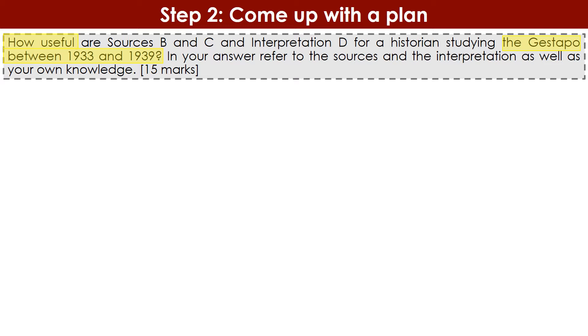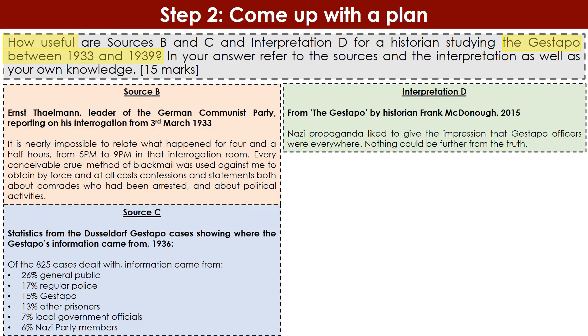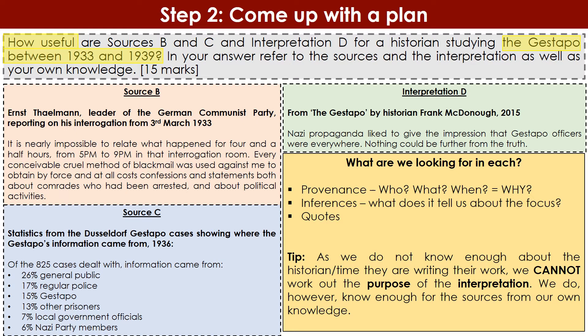Now you've broken down the question and highlighted it on your exam paper; it's time to come up with a plan. For each of the sources and the interpretation, you need to look out for the provenance. Those who watched the 7-mark video will know what provenance means. It's that bold piece of information at the top of the source or interpretation that tells you exactly where it has come from — the background and origin of the source.